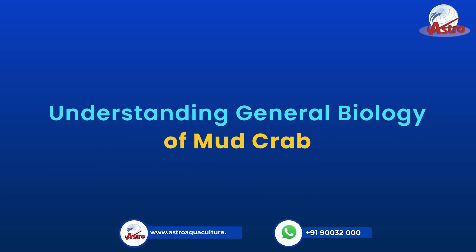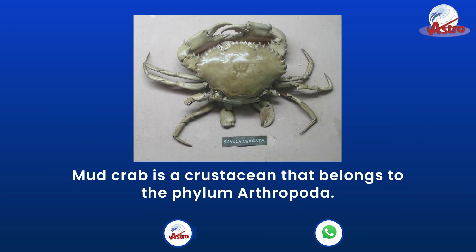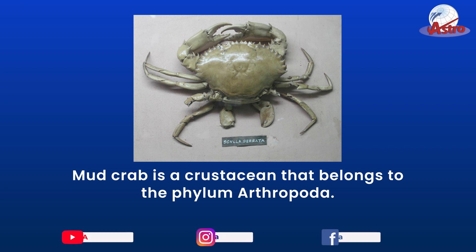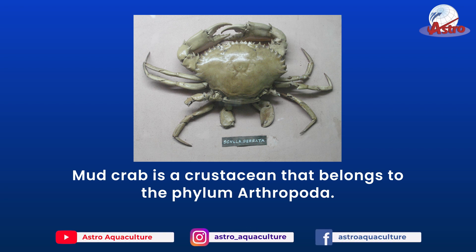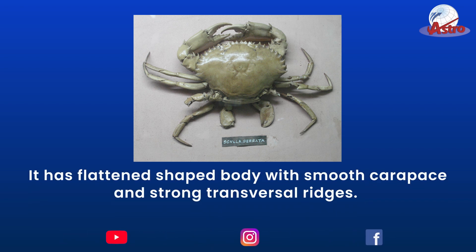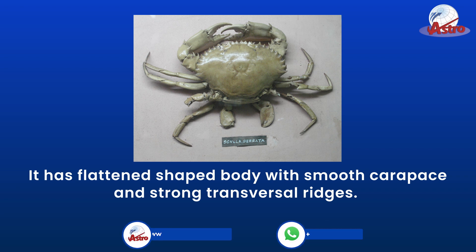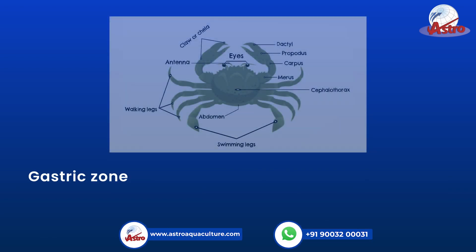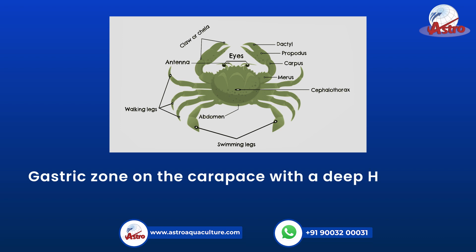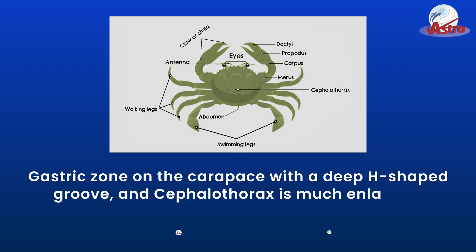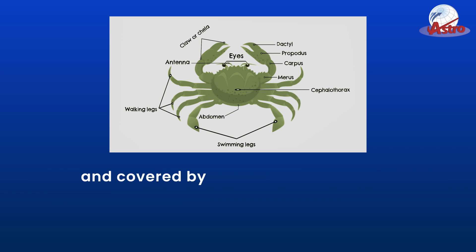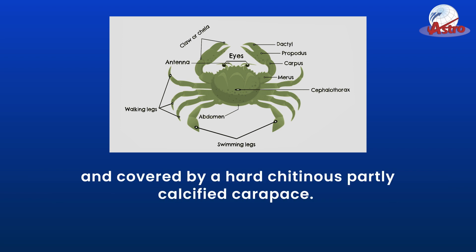Mud crab is a crustacean that belongs to the phylum Arthropoda. It has a flattened-shaped body with smooth carapace and strong transversal ridges. The gastric zone on the carapace has a deep-edge-shaped groove, and the cephalothorax is much enlarged and covered by a hard chitinous, partly calcified carapace.